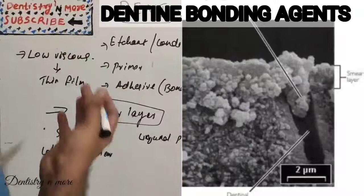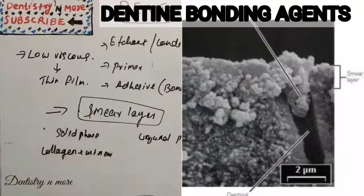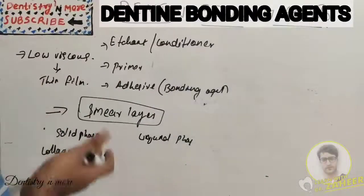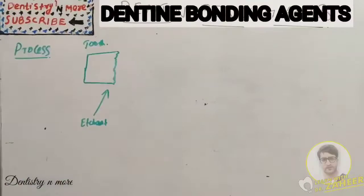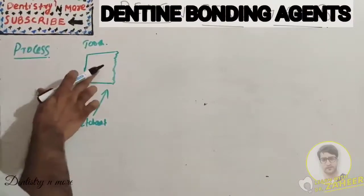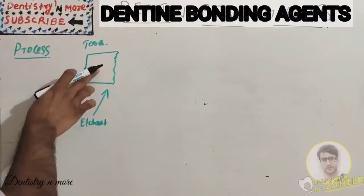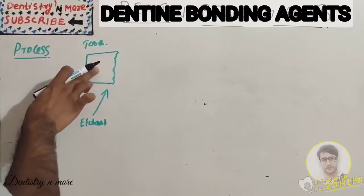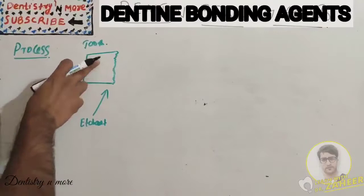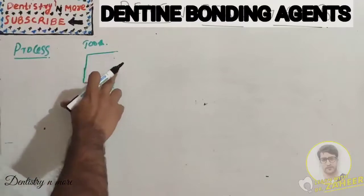The smear layer is a big challenge. It acts as a barrier, lowers dentine permeability, prevents a decrease in bond strength, and lowers the effect of pulpal pressure on bond strength. We need to understand the process of bonding - we have the tooth, and ultimately the composite restoration is applied.